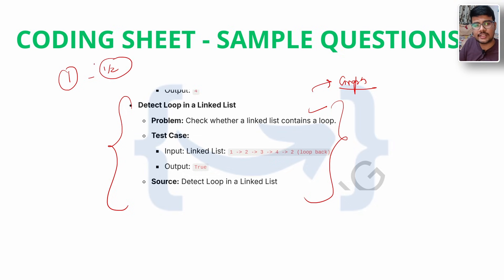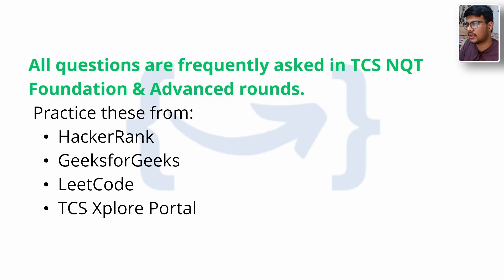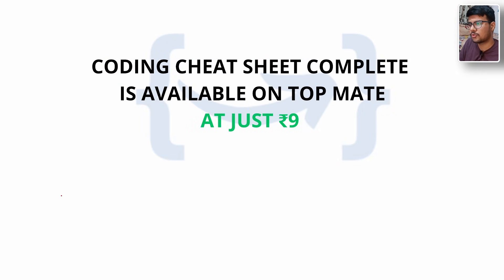For the second question, aim to at least pass half of the test cases. If your aptitude round goes well there are high chances of getting a Prime call. If you solve one question fully and your aptitude went well, you will definitely secure a digital profile. All questions are frequently asked in TCS NQT foundations and advanced coding rounds. Practice them from HackerRank, GFG, LeetCode and the TCS iON Explorer portal.